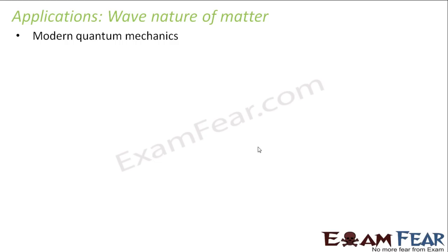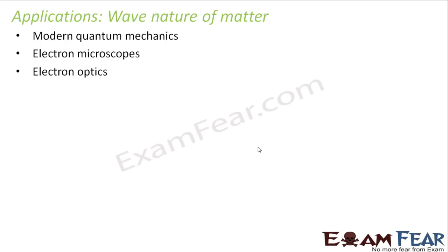The wave nature of matter, de Broglie's hypothesis, and Heisenberg's principle all set the first stones towards quantum mechanics. Electron microscopes are a very important application of what we studied so far. Electron optics is another branch which has evolved from the dual nature of radiation and matter. Now that we are done with our lesson, let us go ahead and try to solve some problems.